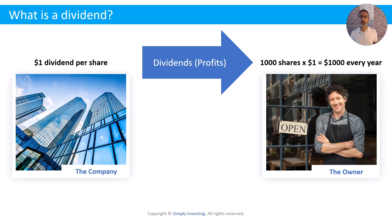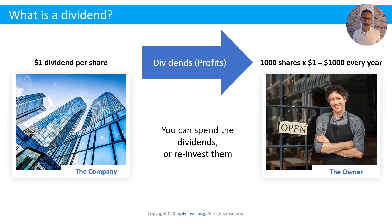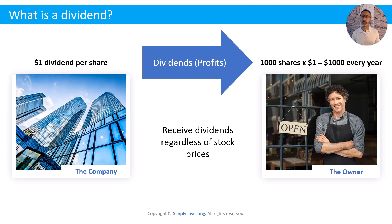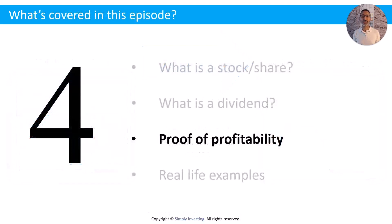In this case it's an annual dividend of $1 per share. You can spend those dividends or reinvest them — they are deposited as cash into your trading account. It's important to note that you'll receive $1,000 every year regardless of the stock price or what happens in the stock market. The stock price can go up or down, but as long as you own those shares and the company continues to pay the dividend, you will receive $1,000 cash deposited into your trading account every single year.